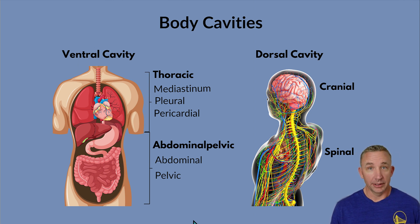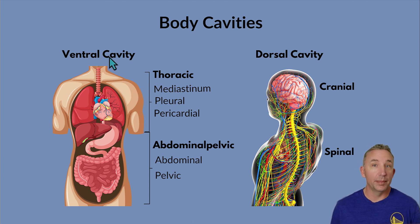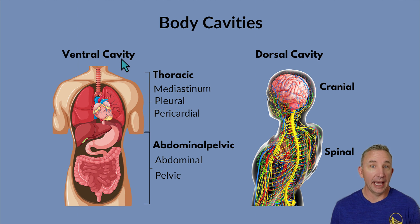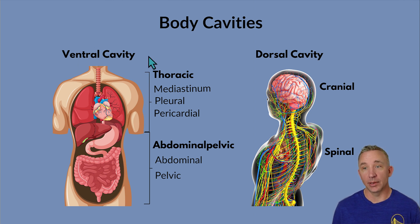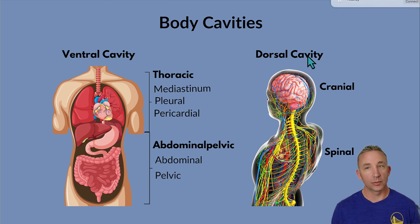My dog Walter is very excited about this video, so if you hear him snoring, that's him. As we learn these spaces, we divide them into two basic cavities: the ventral cavity, or anterior — the front side of the body — and then the dorsal cavity. Let's start with the dorsal, just because it's simple. Dorsal refers more to the posterior.